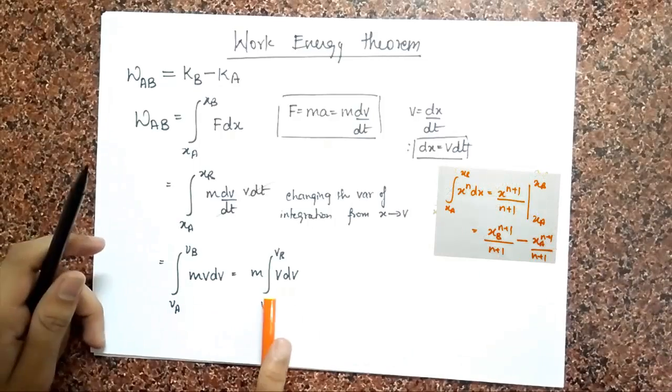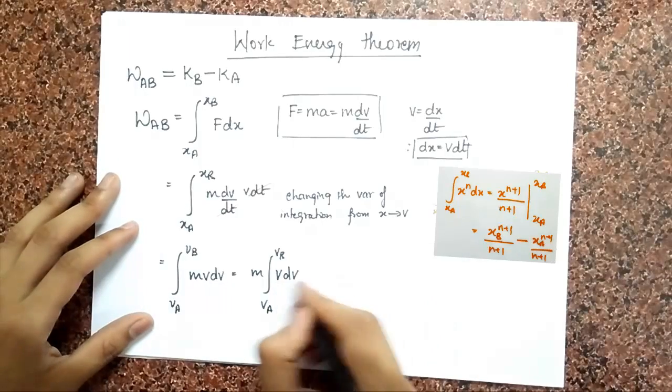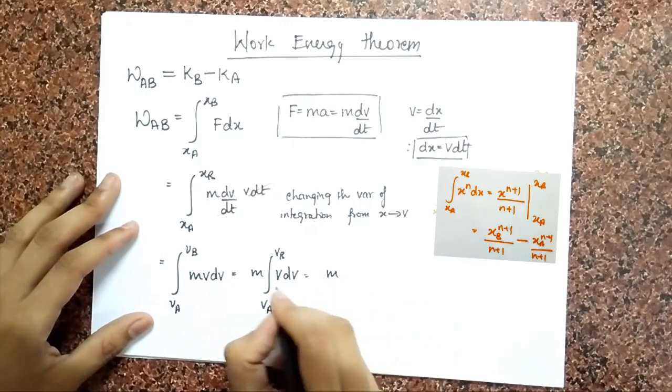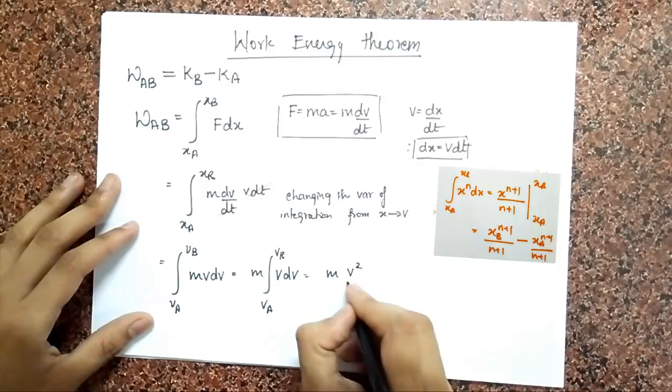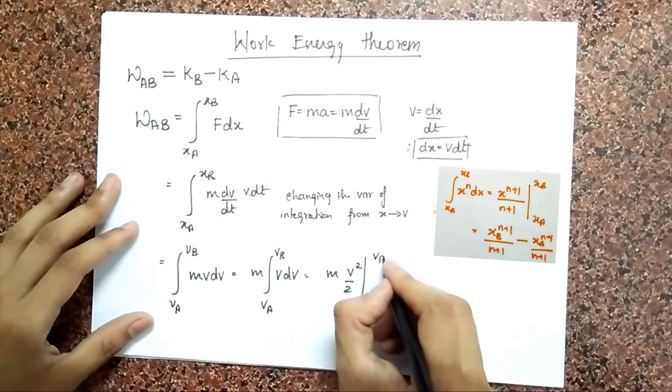So if you do the same thing, you see there is a V dV here. And N equals 1, so when I integrate this, I get V squared by 2, from VA to VB.